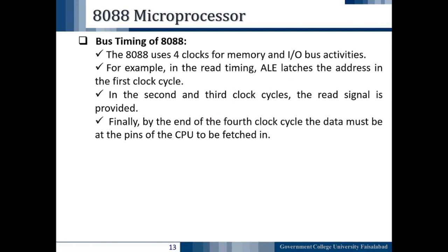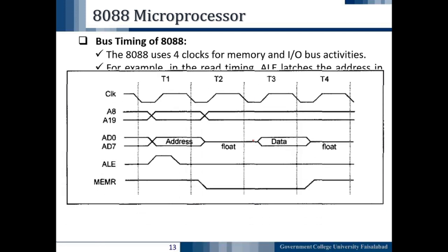By the end of the fourth clock cycle T4, the data must be at the pins of the CPU to be fetched in. As seen in the diagram, when the memory read signal is provided by the CPU, after some floating time the data is available on the data bus. The floating time is the time in which the memory locates the data from the given 20-bit address.